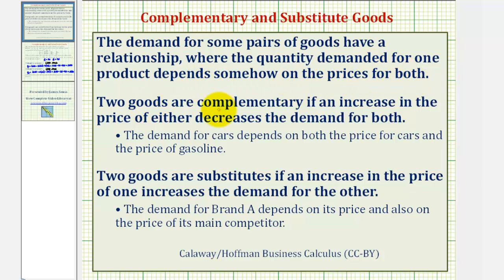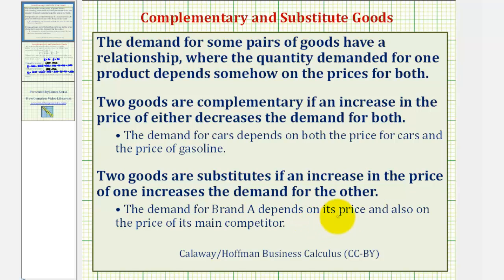Two goods are called complementary if an increase in the price of either decreases the demand for both. For example, the demand for cars depends both on the price for cars and also on the price of gas. Two goods are called substitutes if an increase in the price of one increases the demand for another. For example, the demand for brand A depends on its price and also on the price of its main competitor.